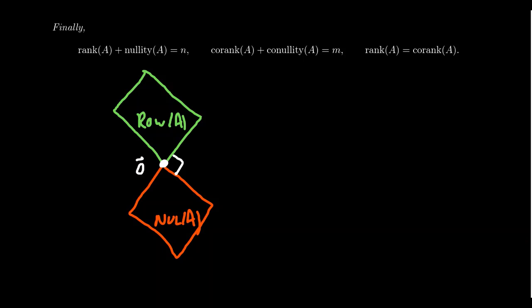So the only thing that lives in both the row space and the null space is the zero vector. Otherwise, everything between the two is orthogonal to each other. And so if you put them together, you end up with the domain, which is F^n.